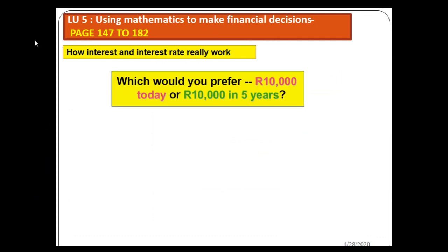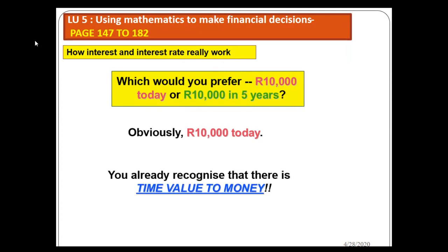If I may ask you this question: can I give you ten thousand today, or ten thousand in five years? Think about it. What would your answer be? I know we've got different preferences, but for me, obviously I'm going to say ten thousand today. Why? Because of the time value of money.